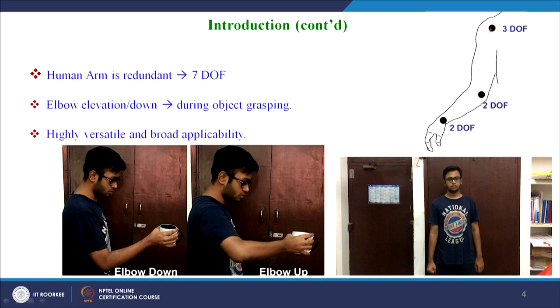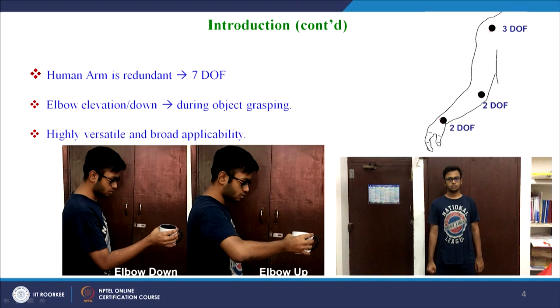The three degrees of freedom in the shoulder are roll, pitch, and yaw. In the elbow we have two — flexion-extension and pronation-supination — and here also we have two degrees of freedom in the wrist. Thus totally we have seven degrees of freedom for the human arm. This seven degrees of freedom mapping to six degrees of freedom in Cartesian space gives one degree of freedom extra for the human arm, making it versatile and with broad applicability.